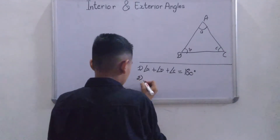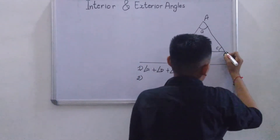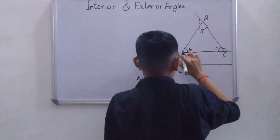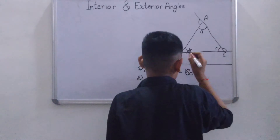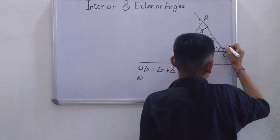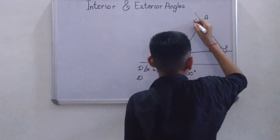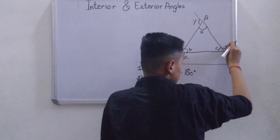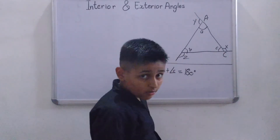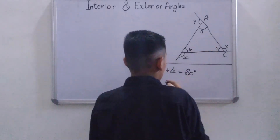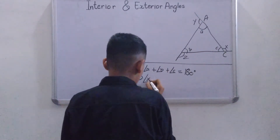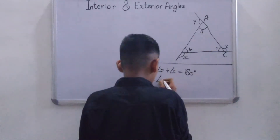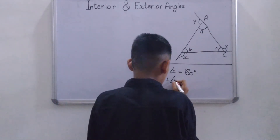Our second property — let's find the exterior angle now. This is one exterior angle, this is one exterior angle, and this is an exterior angle. Let's name the angles as X, Y, and Z. Now, Angle X, meaning an exterior angle, is equal to the sum of the two opposite interior angles.